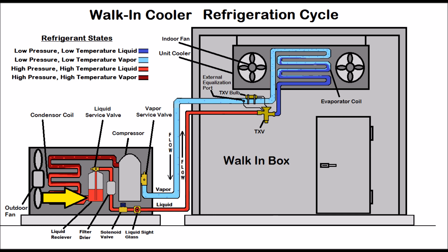The liquid receiver is a storage vessel for the sub-cooled liquid. The amount of liquid in that receiver has a direct correlation to how cold the walk-in box is. If it's very cold in the walk-in box the system doesn't need as much liquid refrigerant, so it's stored in the receiver. When you first start a walk-in box up, that liquid receiver should be drained almost all the way down, and you should have a solid column of liquid heading through the liquid sight glass — verifying you have enough sub-cooled liquid heading to the TXV. You don't want to add extra refrigerant that will simply be stored in the liquid receiver.